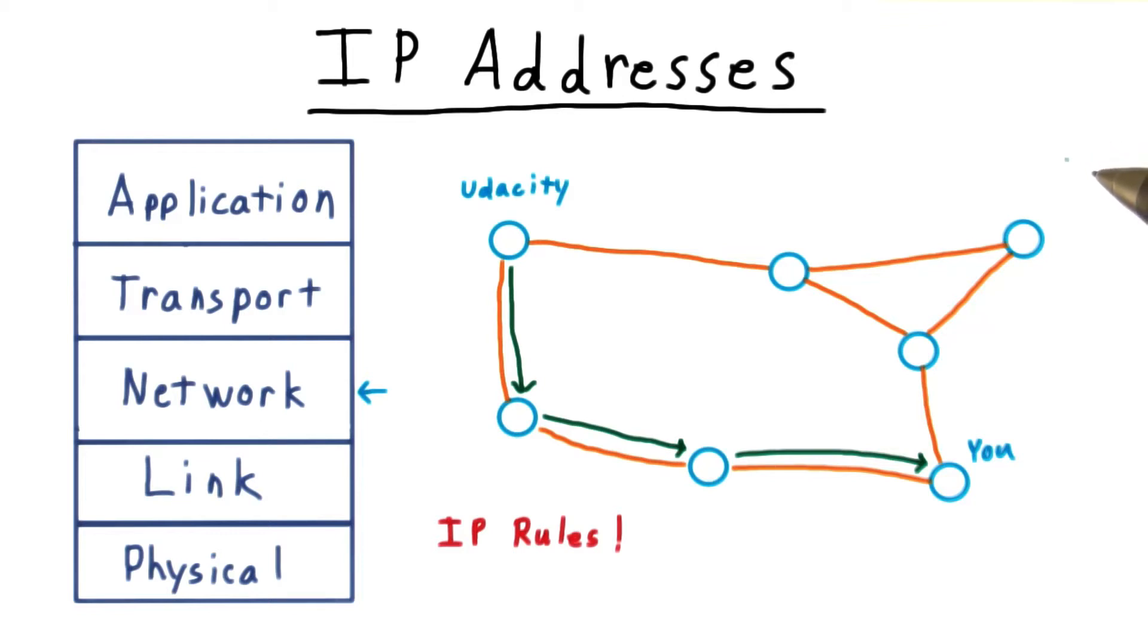Having covered how machines communicate across a local area network, we now turn our attention to how they communicate across the Internet and the network layer of our hierarchy.